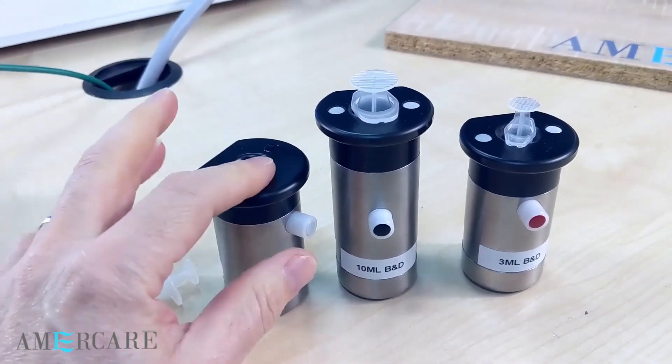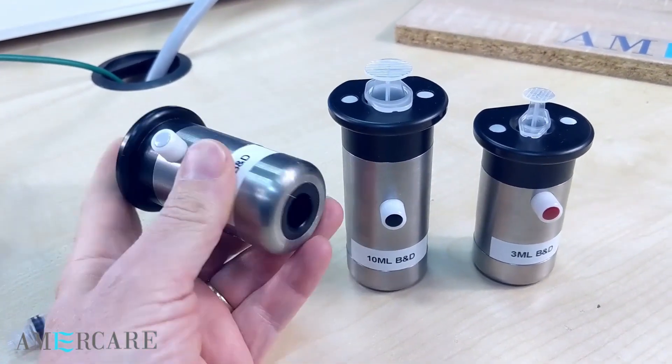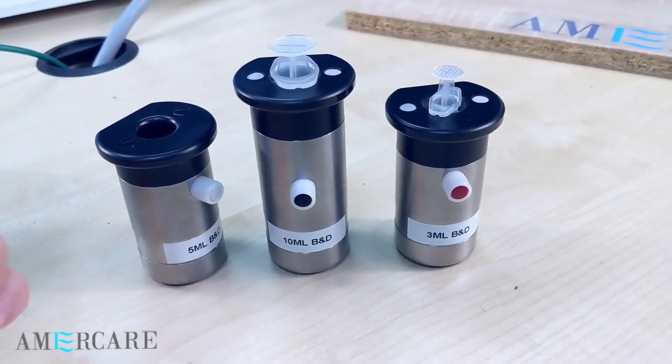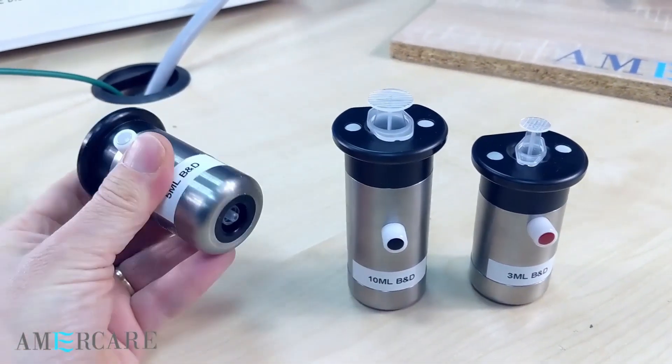The syringe shield consists of two parts: the plastic upper and the tungsten body with a 9mm wall thickness. The design ensures that the syringe is held centrally and is sized to the correct length of the body.